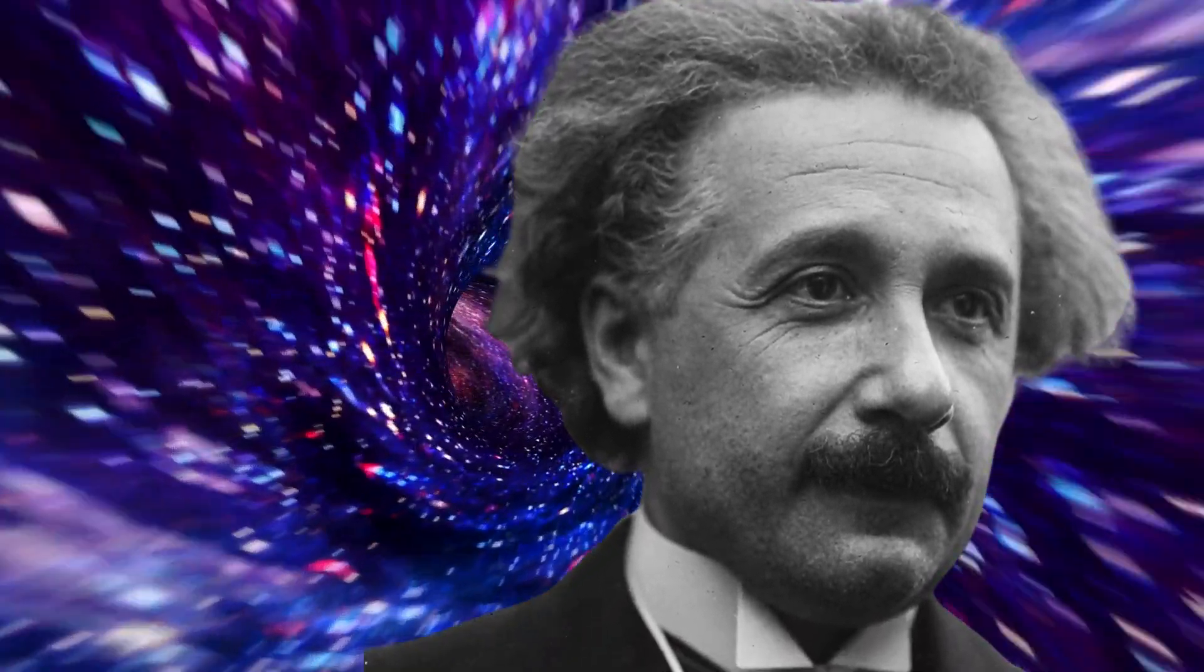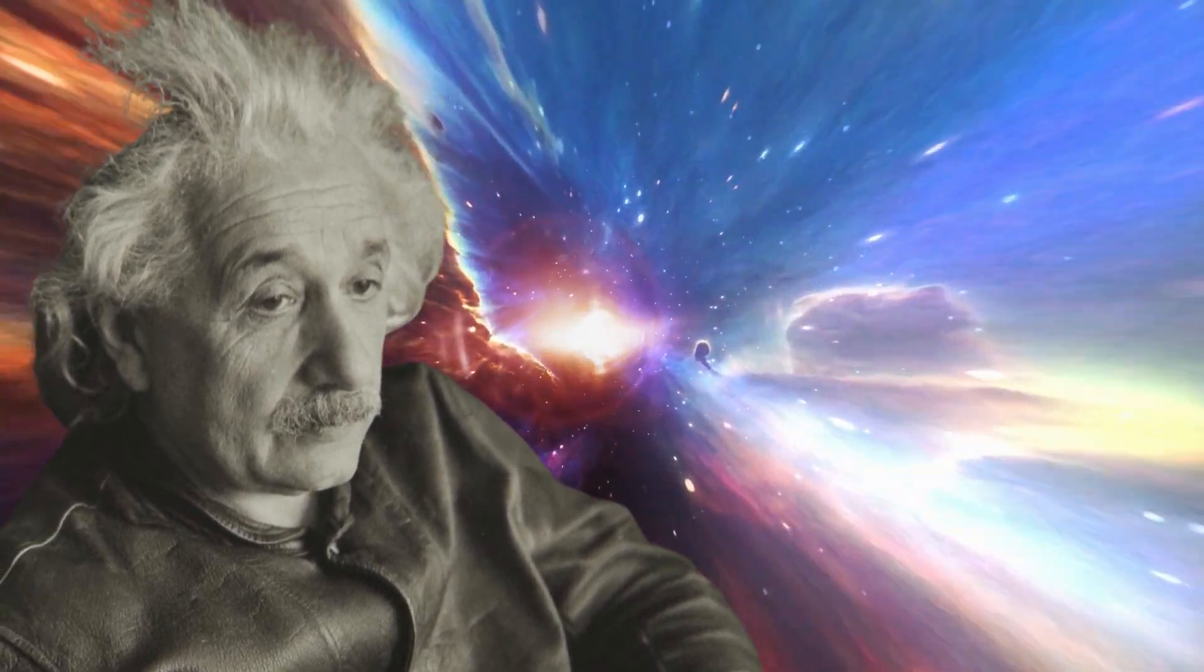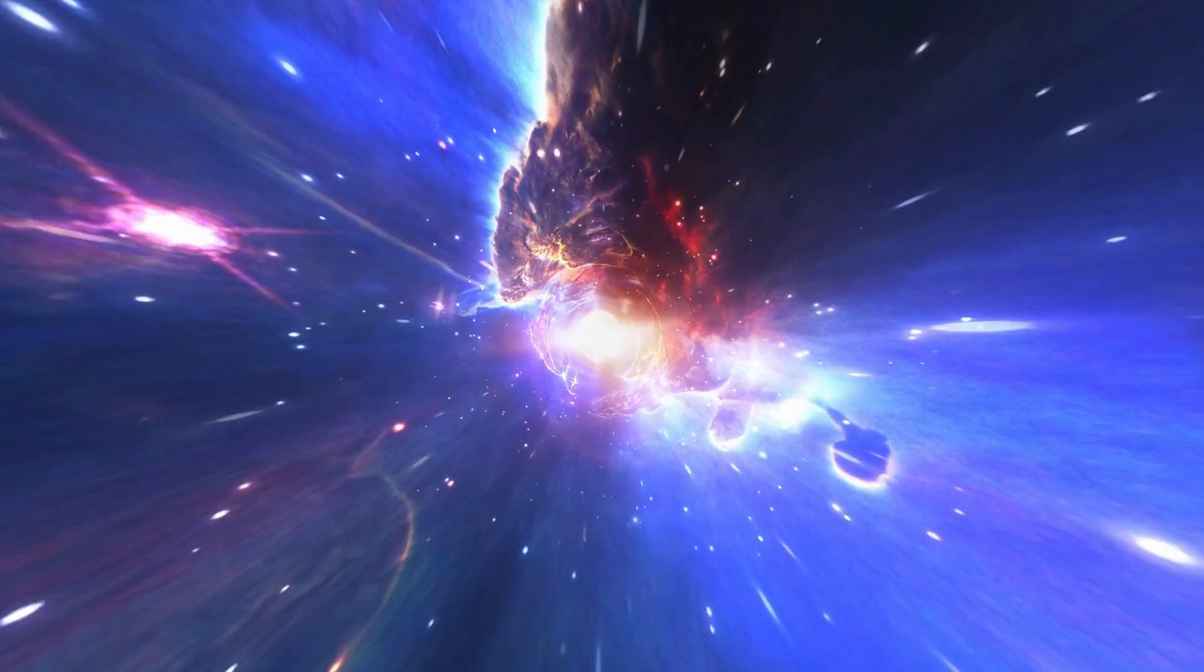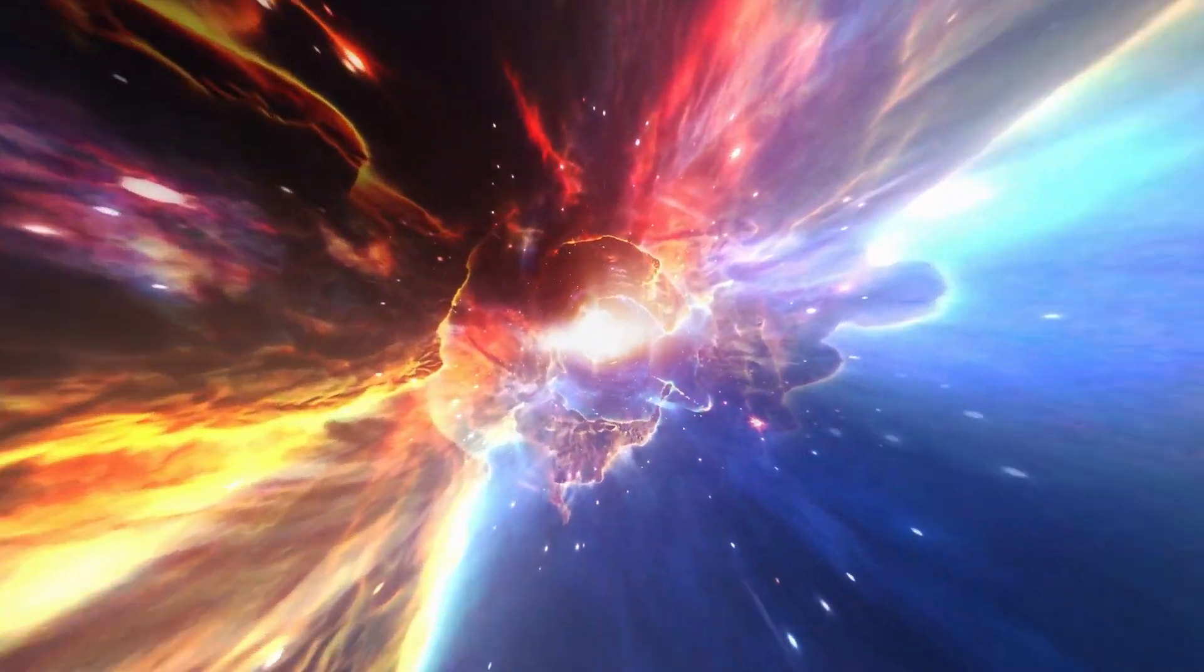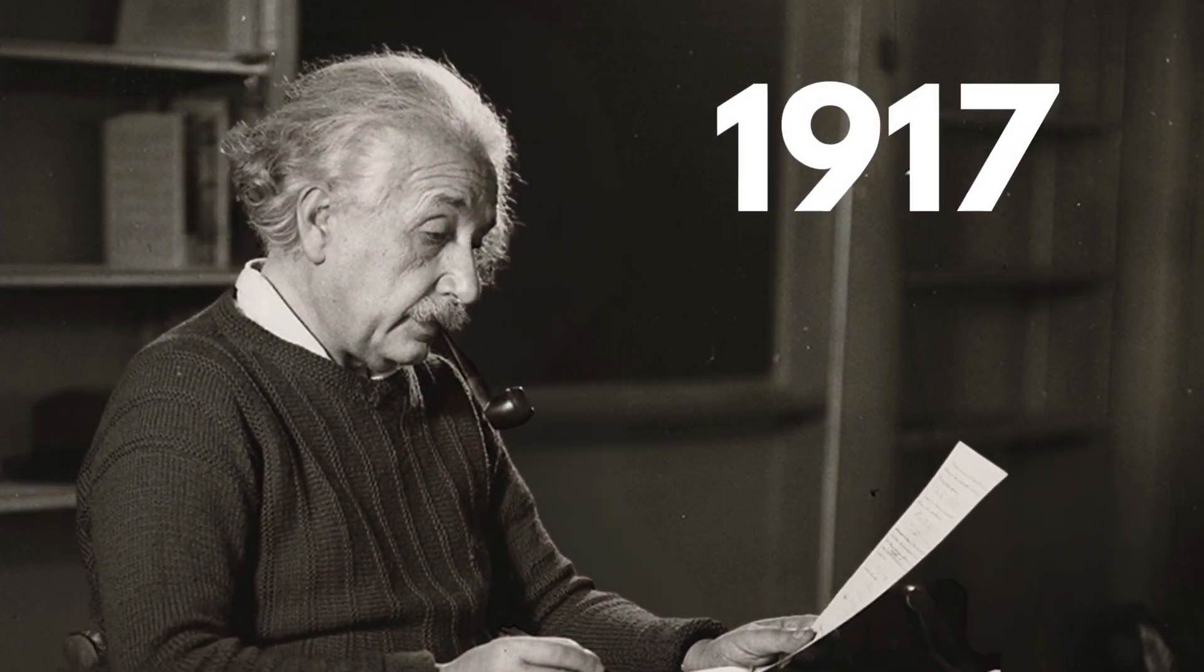Albert Einstein is undoubtedly one of the most iconic and famous scientists of all time. His revolutionary ideas have fundamentally changed the way we perceive the world around us. However, even the greatest minds are not infallible, and Einstein is no exception. Let's take a closer look at Einstein's 8 biggest mistakes chronologically.